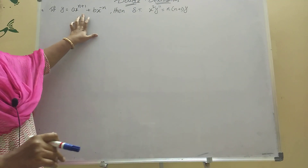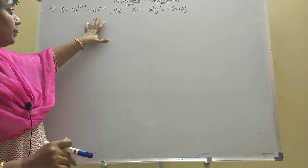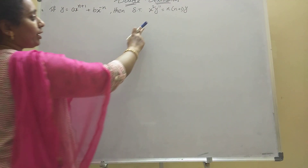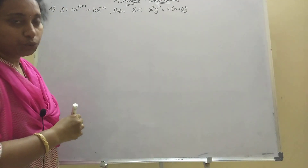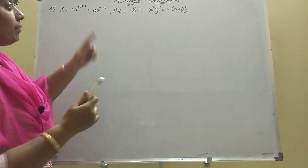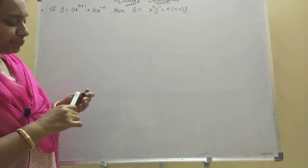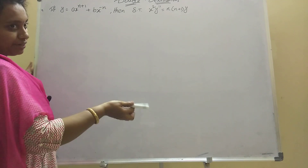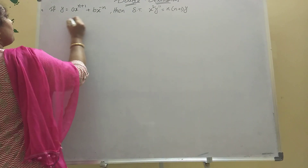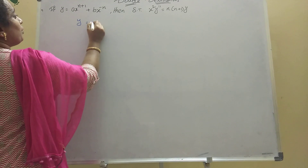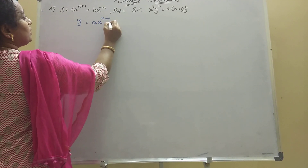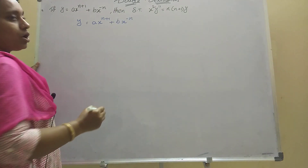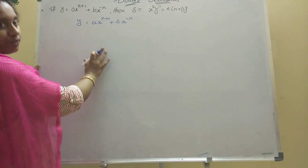Given: y = a·x^(n+1) + b·x^(-n). We need to show that x²·y'' = n(n+1)·y. To find the double derivative, first you do the first derivative, then you do the second derivative — that is the double derivative.